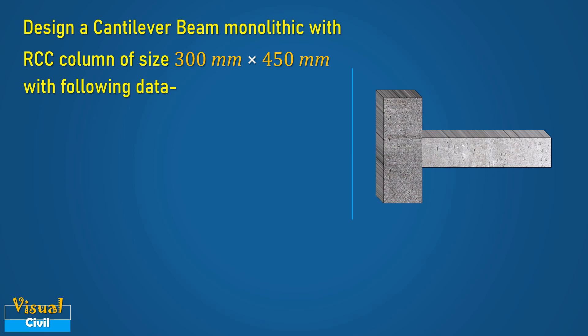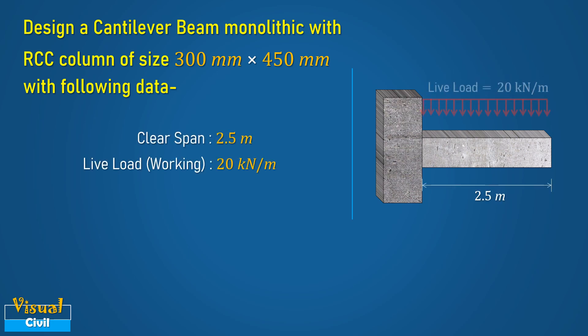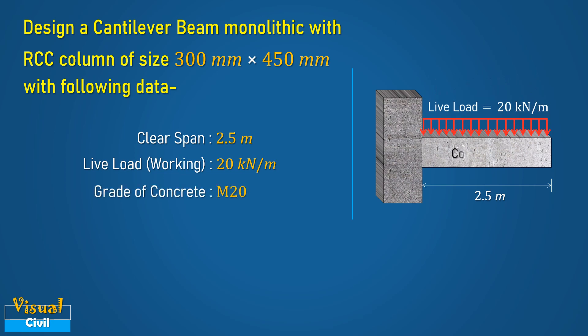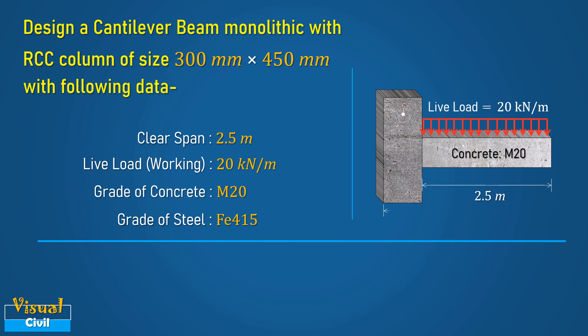The clear span is 2.5 meters. The live load acting on the beam is 20 kN per meter. The grade of concrete is M20 and the grade of steel is Fe415 HYSD bars.